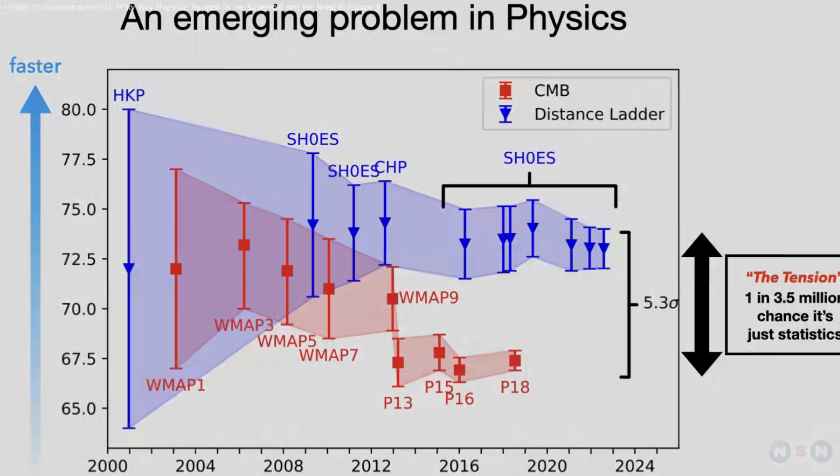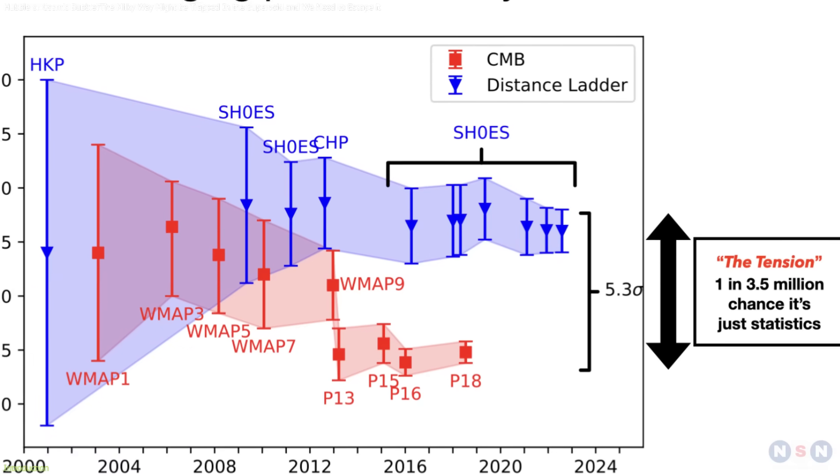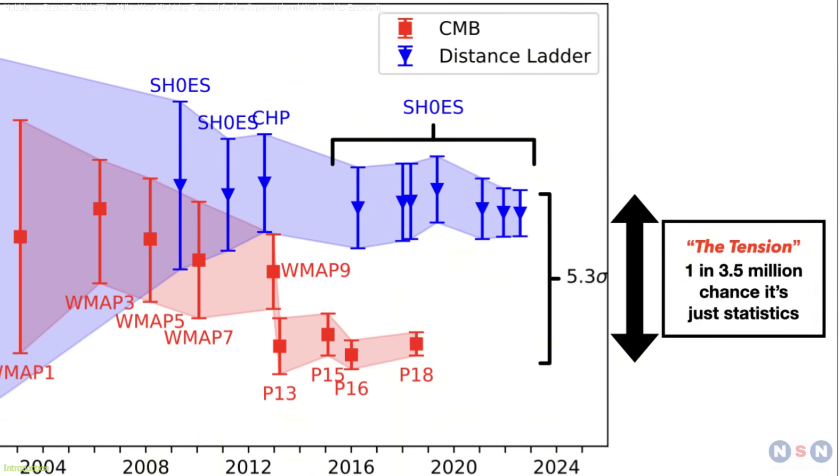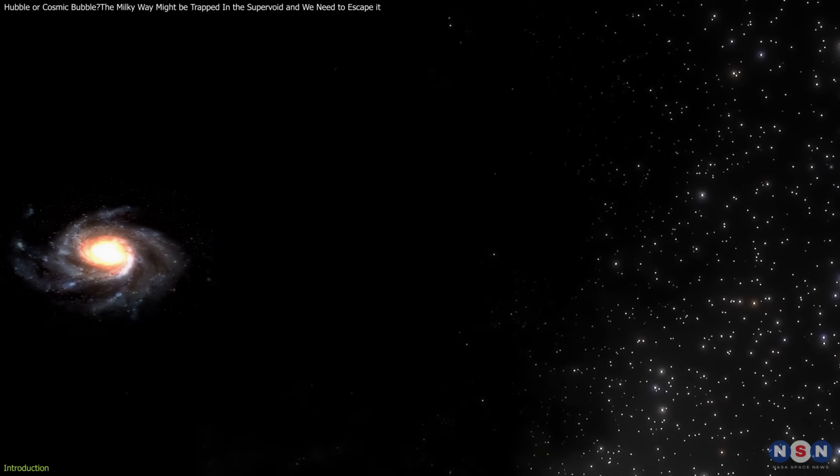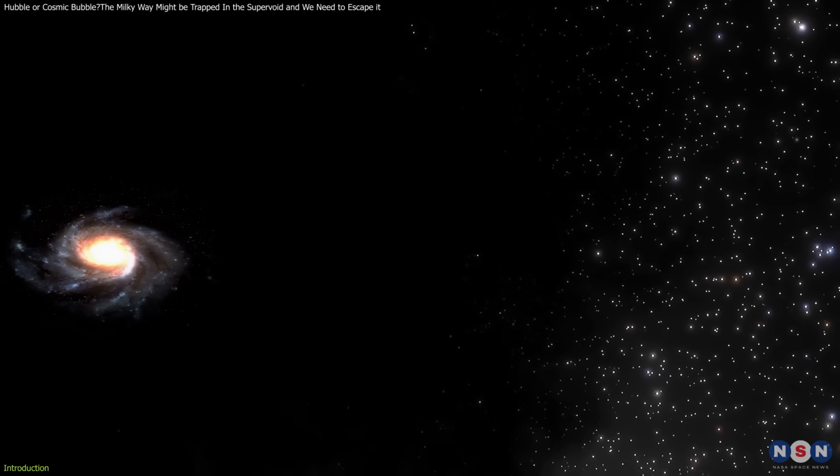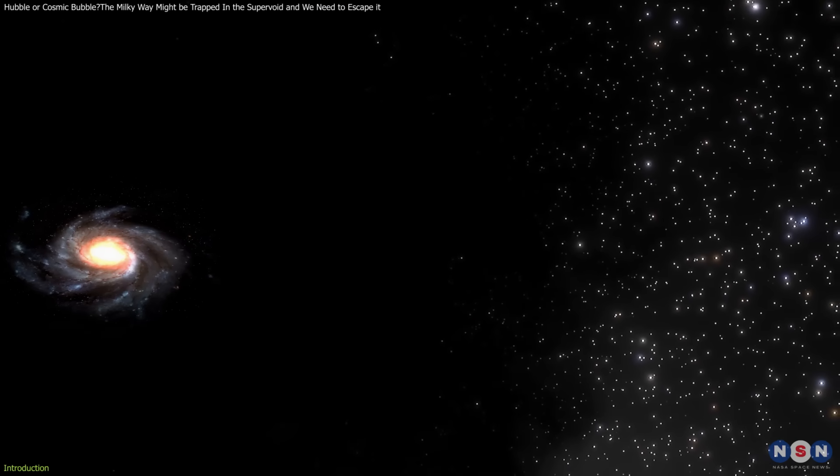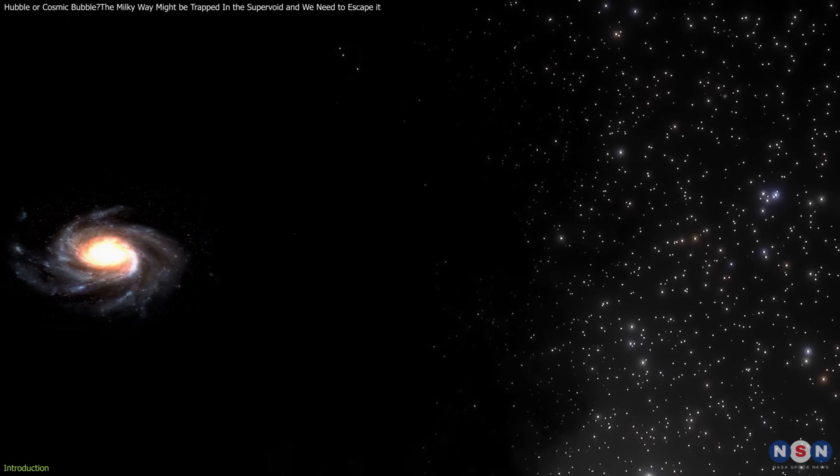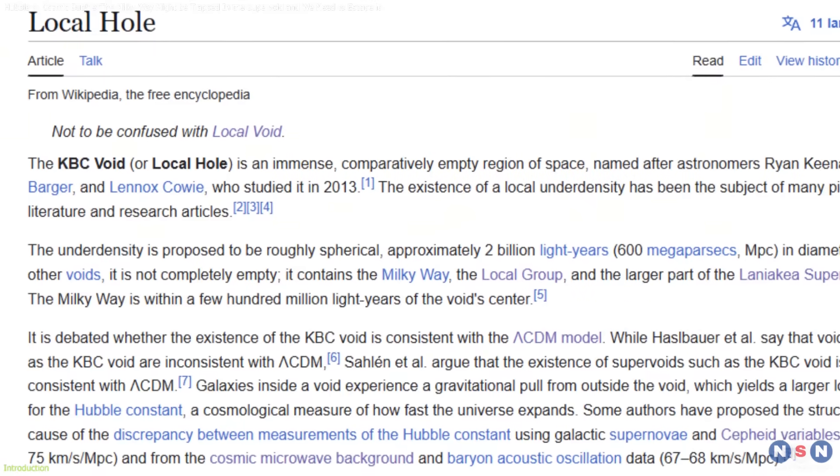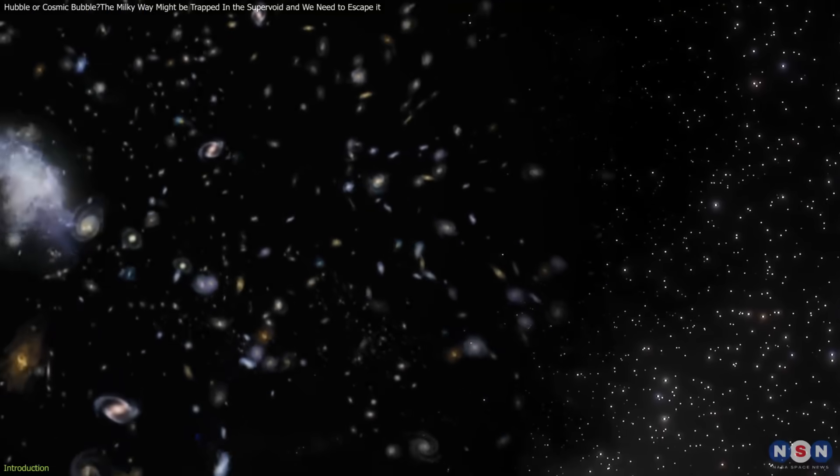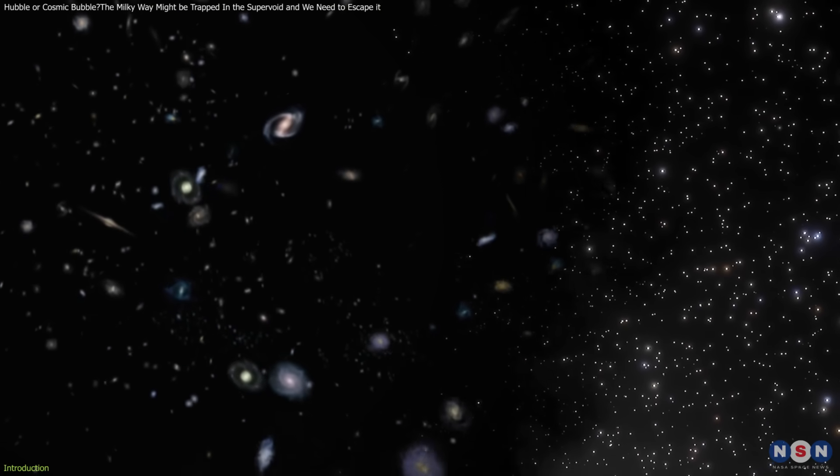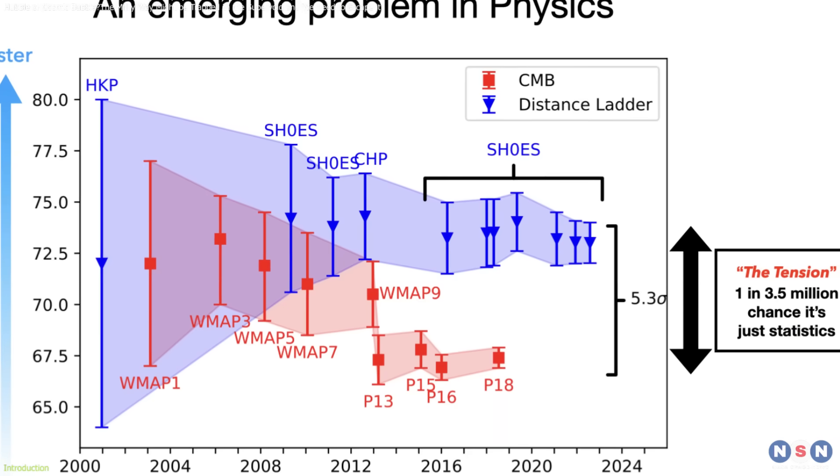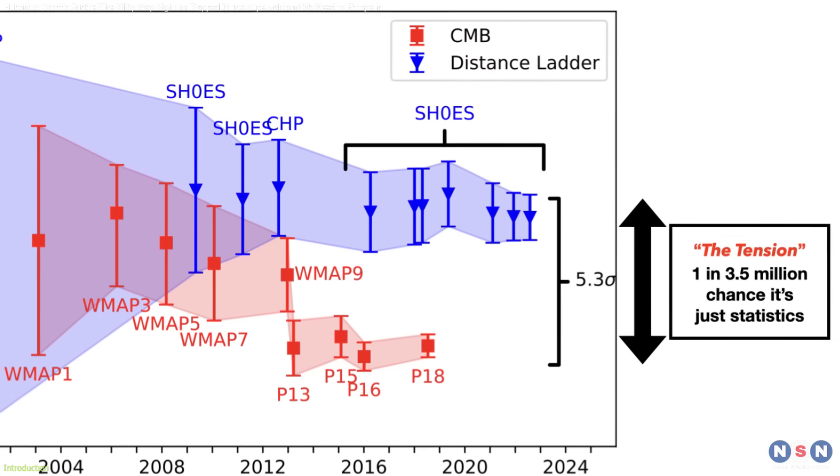The Hubble Tension, a puzzling disagreement in how we measure the universe's rate of expansion, might finally have a solution. Scientists are exploring a fascinating new hypothesis that places our galaxy inside a vast, underdense region of space called the KBC Supervoid. This colossal cosmic hole could be skewing our measurements of the universe's expansion and might hold the key to resolving this long-standing cosmic mystery.